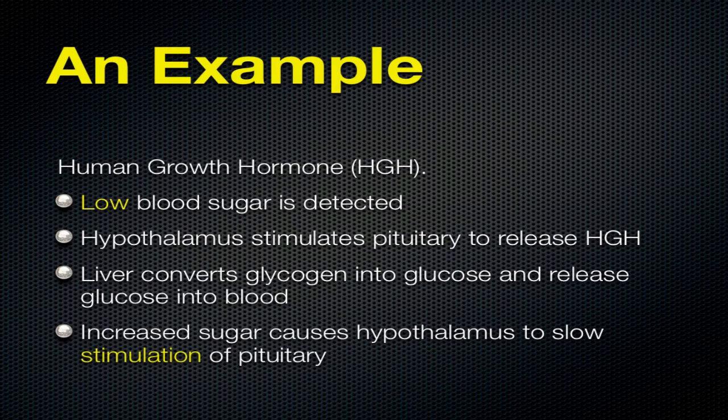The sugar levels increase and then the hypothalamus is going to say the sugar levels are increasing - I can slow down the release of HGH from the pituitary gland. So it goes down, something tells it to go back up, then it goes up and then it says it's getting up there, we can stop now. And that cycle continues.